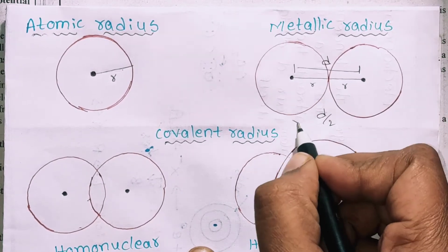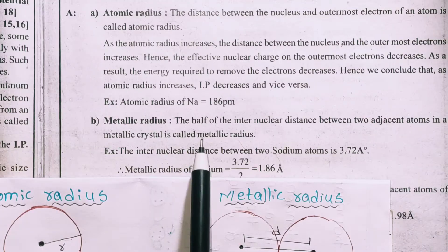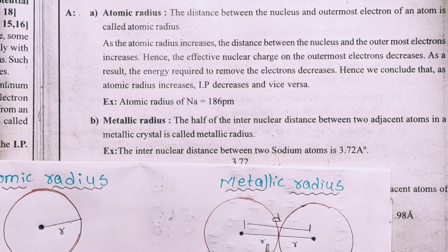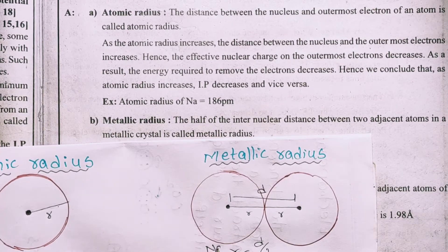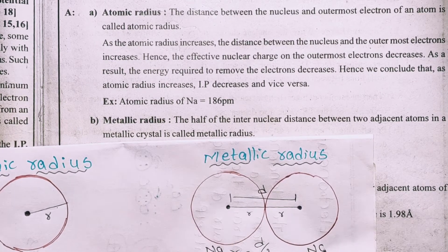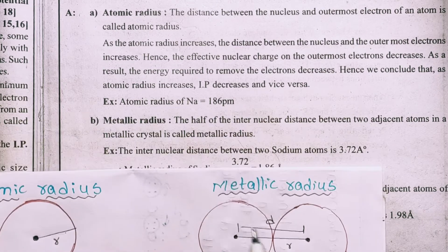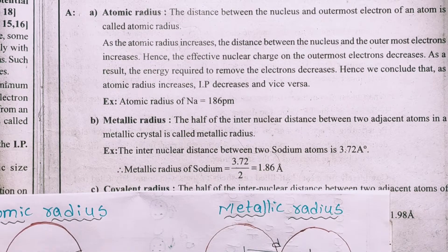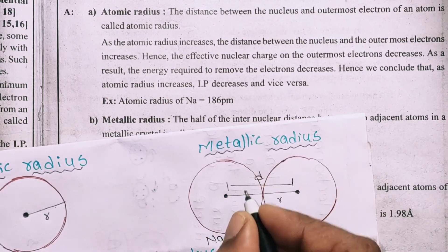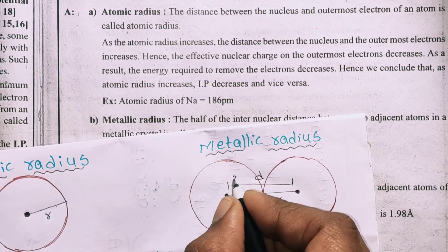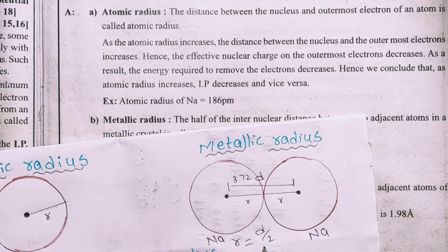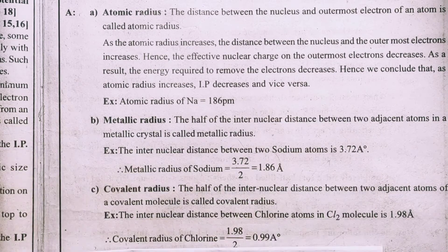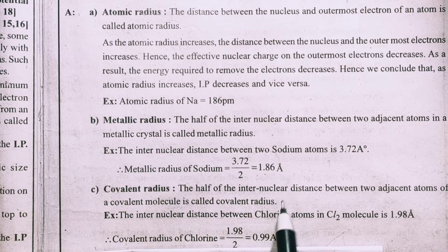D by 2 is equal to R. R is called metallic radius. For example, here we have two sodium atoms (Na). The distance between them is 3.72 Å. So D is 3.72 divided by 2, which gives the answer 1.86 Å.